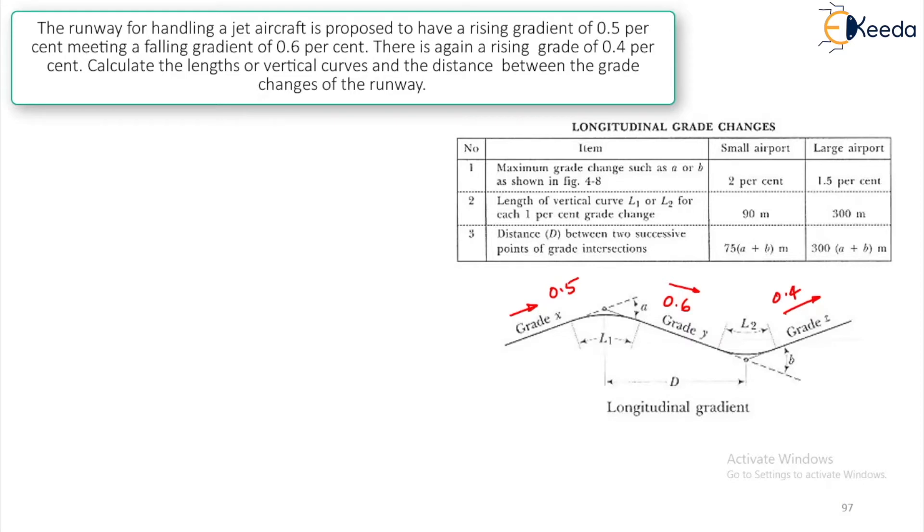Calculate the lengths of the vertical curves. We have to calculate this L1 and this L2 and the distance between the grade changes of the runway. That is nothing but this. From the center of this point to center of this point will be the grade change of runway. That also we need to calculate. Now, first let us calculate.